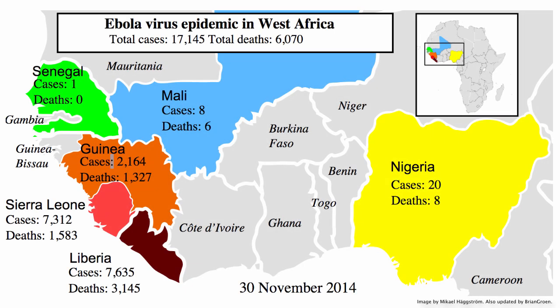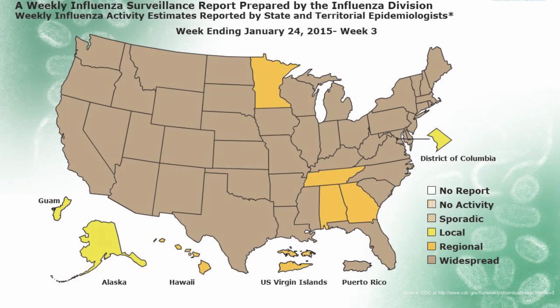While listening to the evening news, you hear of an outbreak of Ebola virus and the fact that the influenza virus is at pandemic levels. Both these terms sound ominous and may sound like they're referring to the same thing. However, to the scientists who study the rates of diseases in populations, called epidemiologists, these terms have very different meanings.